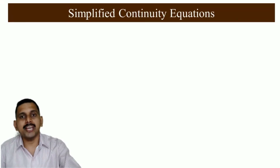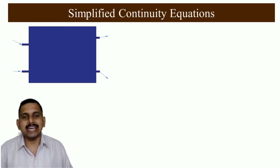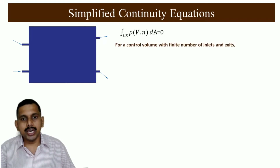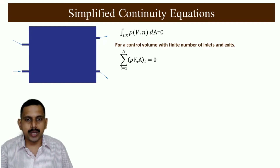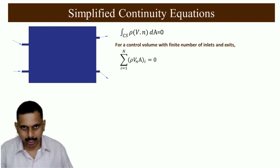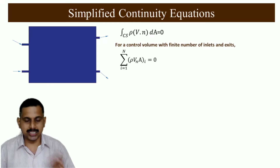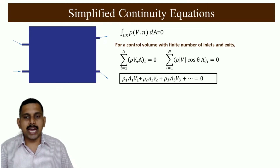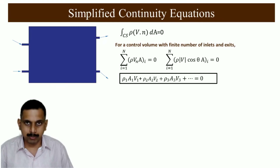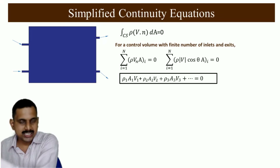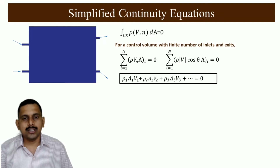We will simplify this equation for engineering purposes. For an engineering device with a finite number of inlets and outlets, we can write the summation from i=1 to n of ρ·Vn·A at each port equals zero, where Vn is the normal velocity to the surface and A is the area. Vn can also be written as V·cos θ, where θ is the angle between velocity and the surface normal. For example, with multiple ports: ρ₁A₁V₁ = ρ₂A₂V₂ + ρ₃A₃V₃ and so on. This is the continuity equation for finite numbers of inlets and outlets.